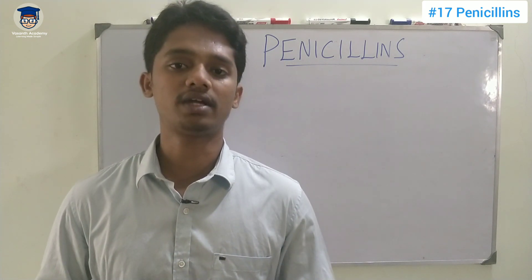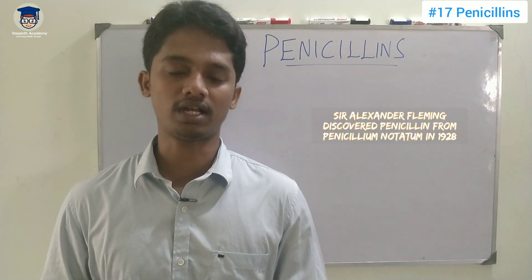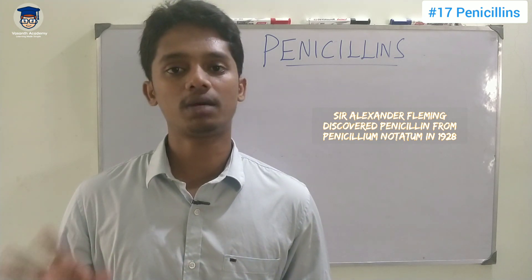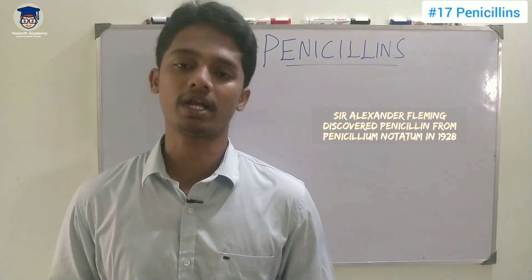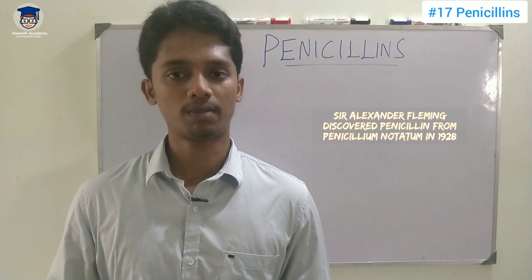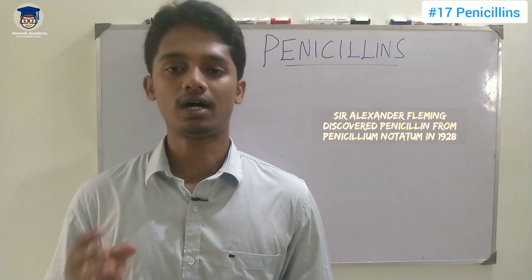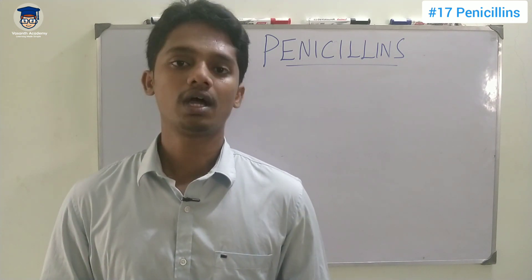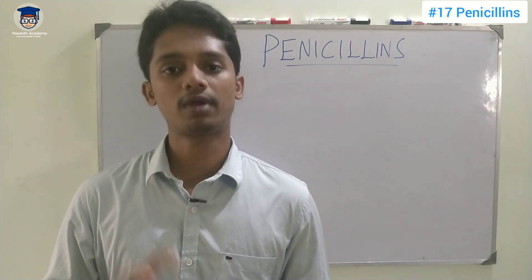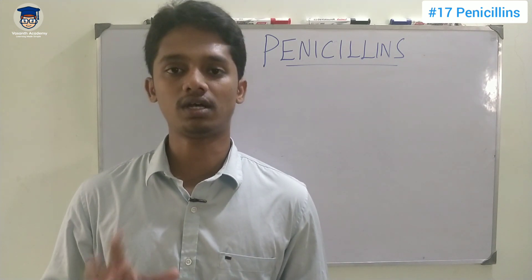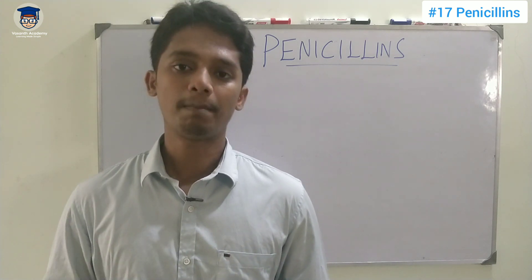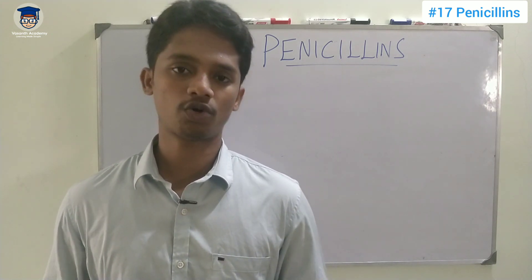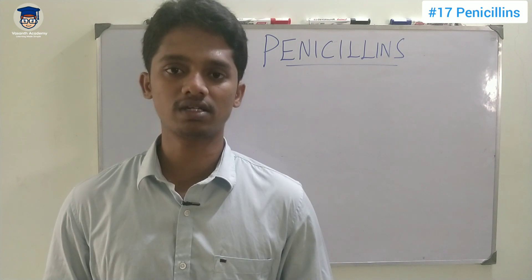If you look at the history of penicillin, in 1928, Alexander Fleming discovered Penicillium notatum. Then in 1940, this drug was developed into a medicine. Penicillium chrysogenum and Penicillium notatum — that is why penicillin became a drug. This is a basic introduction about penicillin.